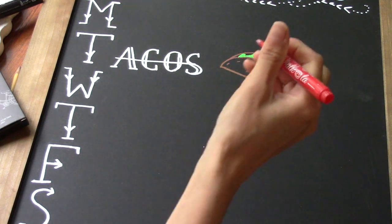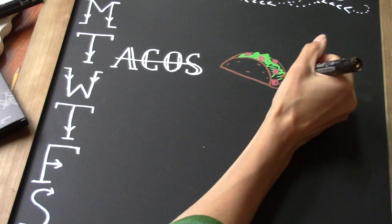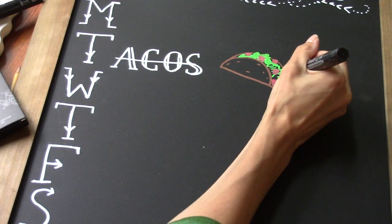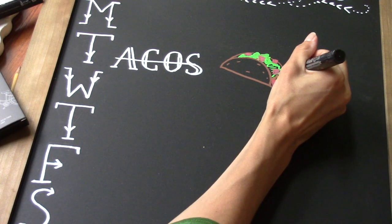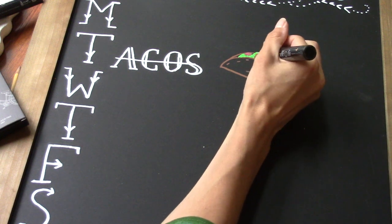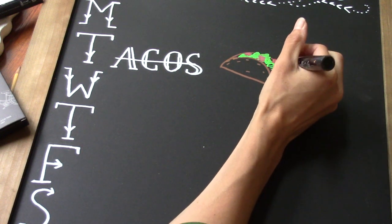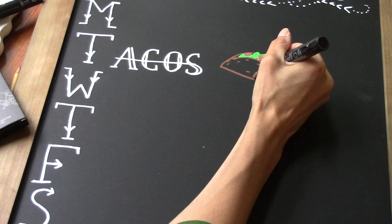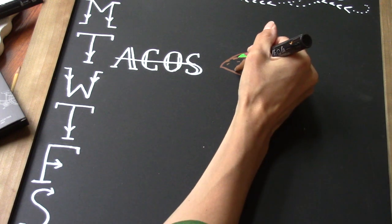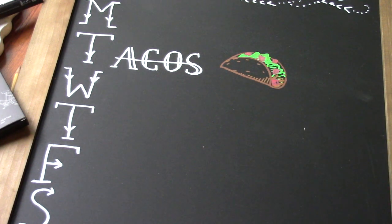And then I'm going to put in my tomatoes, and some brown in here. I'm going to have some taco meat. Put some shading in here—that's kind of fun to do with lines.